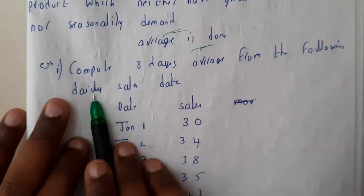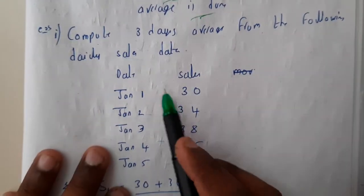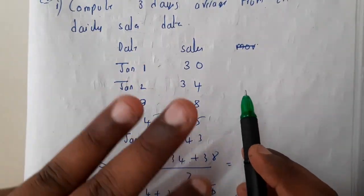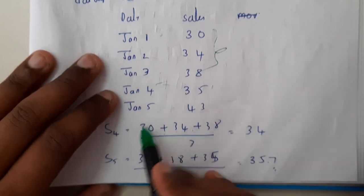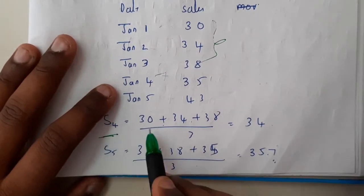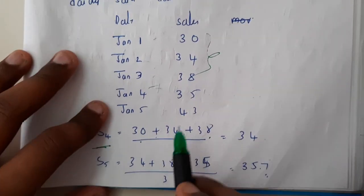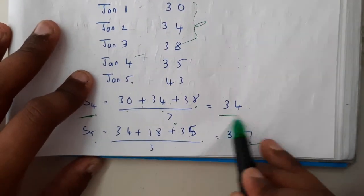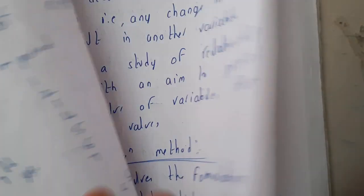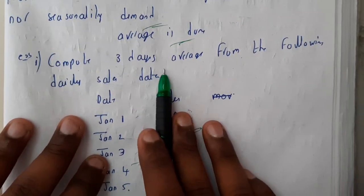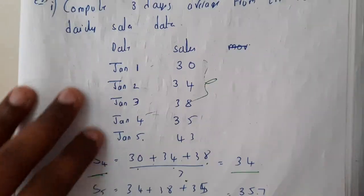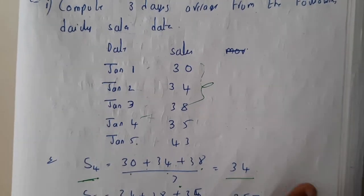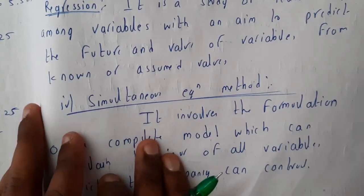For example, compute the three-day moving average for the following daily sales data. For a three-day average, S4 = sum of the first three days divided by 3, and S5 = sum of the next three days divided by 3. We get 34 and 37 as the results for day 4 and day 5.